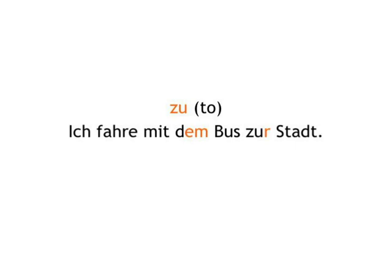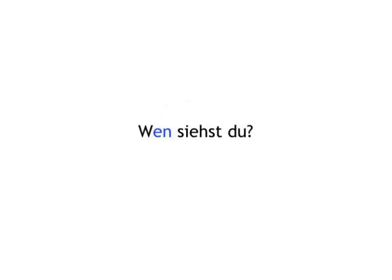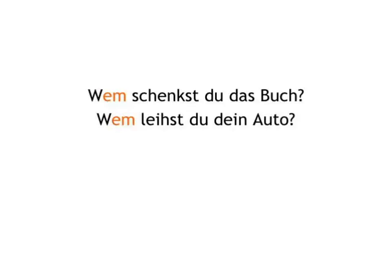And again like the accusative, the dative has its own question word for 'who' to inquire about an indirect object. You'll remember that 'wen' shows the accusative case — you ask: Wen siehst du? Whom do you see? But we ask: Wem schenkst du das Buch? To whom are you giving the book? Wem shows the dative case. Wem leihst du dein Auto? To whom do you lend your car?